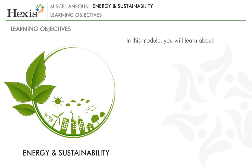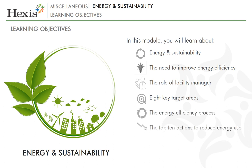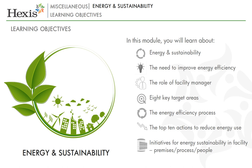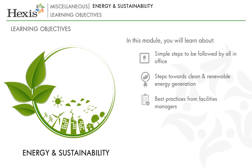By the end of this module, you will be able to: explain Energy and Sustainability; explain the need to improve energy efficiency; describe the role of a facility manager; list the 8 key target areas; explain the energy efficiency process; list the top 10 actions to reduce energy use; describe the initiatives for energy sustainability in facility, premises, process or people; list the simple steps to be followed by all in office; list the steps towards clean and renewable energy generation; discuss the best practices from facilities managers; explain the impact on business; and name the Indian agency's green buildings.